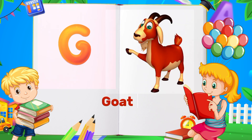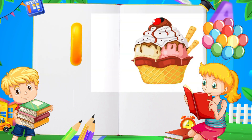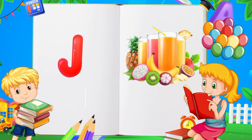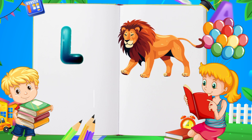G for goat. H for hen. I for ice cream. J for juice. K for kite. L for lion.